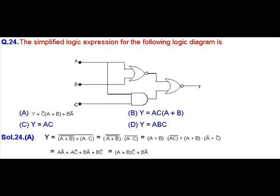MCQ question number 24. In this question, we have been asked to find a simplified logic expression for the following logic diagram given to us. Now we can see that in this logic circuit, two inputs A and B are being applied to a NOR gate and two inputs A and C are being applied to an AND gate. And the output of these two gates, the NOR gate and the AND gate, are further applied to a NOR gate.